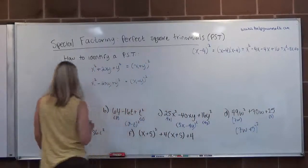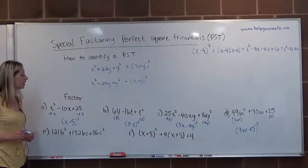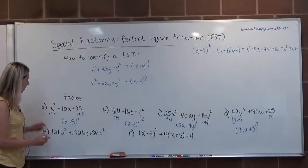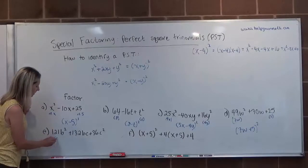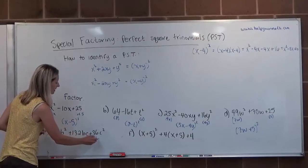Letter E, we have 121B squared plus 132BC plus 36C squared. 121B squared has a root of 11B. 36C squared has a root of 6C.